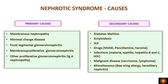Under primary causes we have membranous nephropathy, minimal change disease, focal segmental glomerulonephritis, membranoproliferative glomerulonephritis, and other proliferative glomerulonephritis like IgA nephropathy. Secondary causes include systemic diseases such as diabetes mellitus, amyloidosis, systemic lupus erythematosus, drugs like NSAIDs, penicillamine, or heroin, infections like malaria, syphilis, hepatitis B and C, HIV, malignancies like carcinomas and lymphomas, and miscellaneous conditions like bee sting allergies or hereditary nephritis.